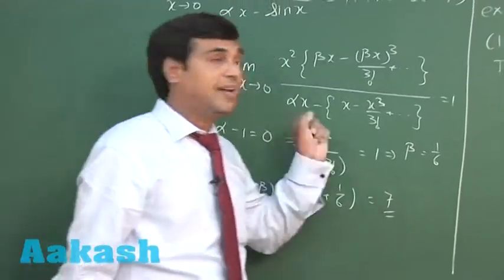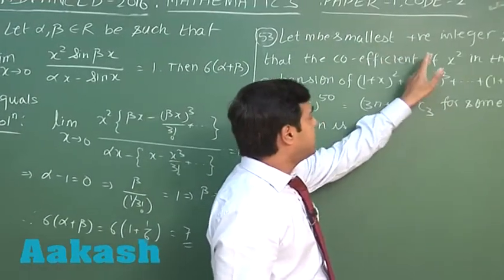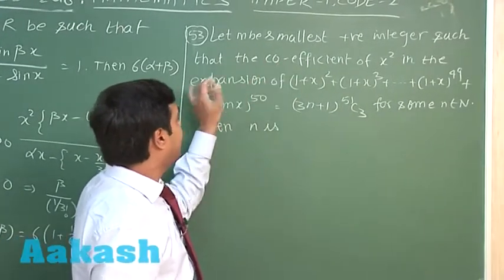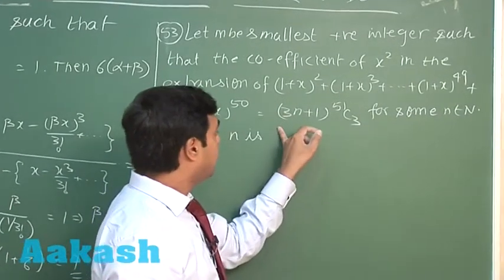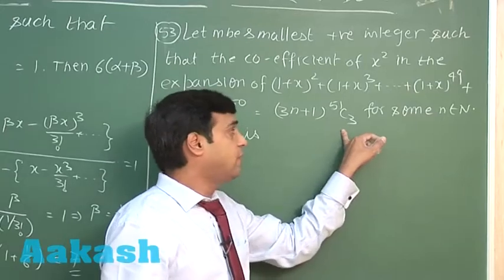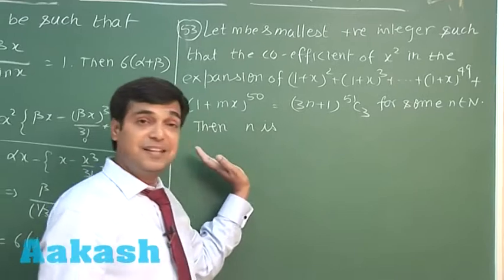Let us take the next one, that is question number 53. Let m be the smallest positive integer such that the coefficient of x square in the expansion of this expression is equal to 3n plus 1 multiplied with 51 C 3 for some positive number n. Then, the value of n is to be obtained.